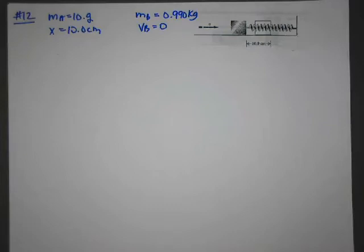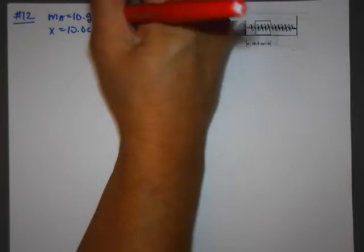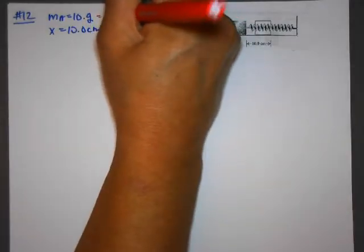Okay, a rifle of mass 10 grams, so we'll convert that to kilograms, so that's going to be 1, 2, 3, that's going to be 0.01 kilograms.